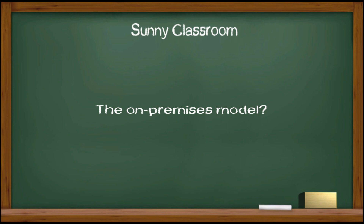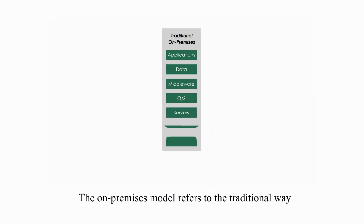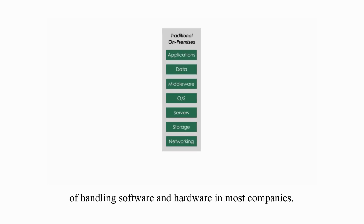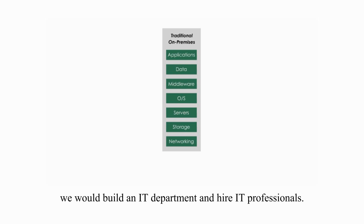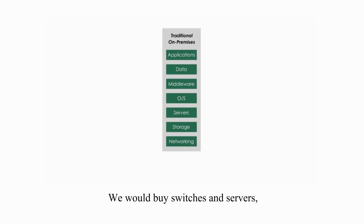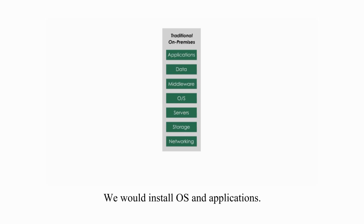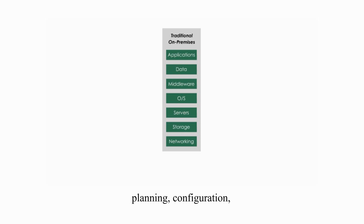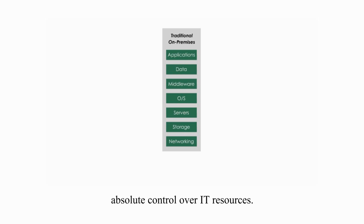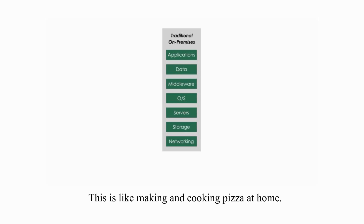So what is the on-premises model? The on-premises model refers to the traditional way of handling software and hardware in most companies. If we were a company or organization, we would build an IT department and hire IT professionals. We would buy switches and servers, find space to host them, supply the power, hook up the keyboards and set up networks. We would install operating systems and applications, and we would do the troubleshooting too. All these require expertise and manpower for planning, configuration, management, and maintenance. Traditional on-premises model gave us absolute control over IT resources.